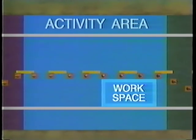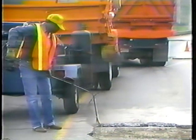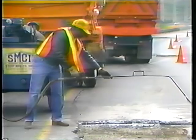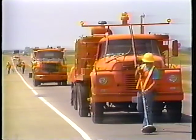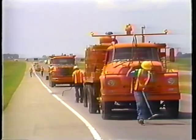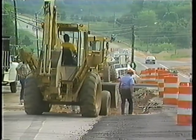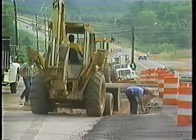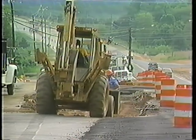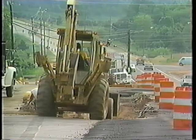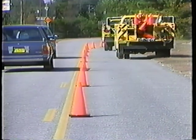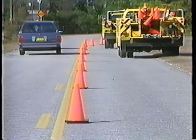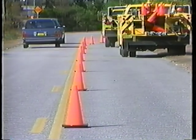The work space is closed to traffic and set aside for exclusive use by workers, equipment, and the storage of construction materials. Work spaces may remain in fixed locations or may move as work progresses. For long-term operations, the work space may be shielded by barriers to exclude traffic and pedestrians. The traffic space is the portion of the roadway in which traffic is routed through the activity area. Channelizing devices are used to separate the traffic space from the work activity at a spacing no greater than twice the posted speed limit.